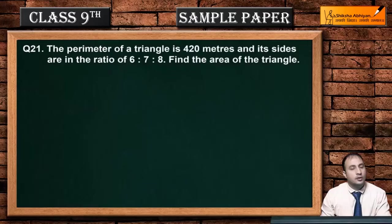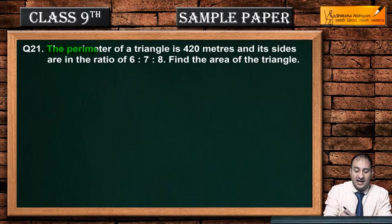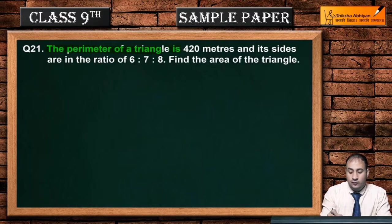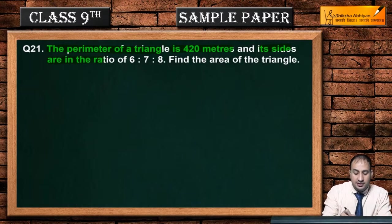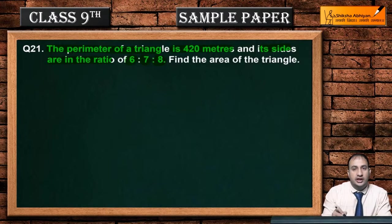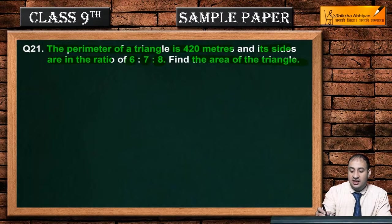The perimeter of a triangle is 420 meters and its sides are in the ratio of 6:7:8. Let's find the area of the triangle.